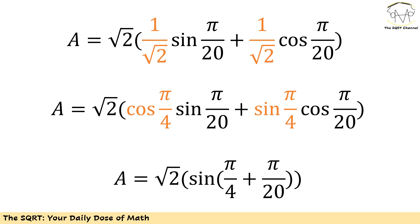So I'm going to replace the first 1 over √2 with cosine of π over 4 and the second with sine of π over 4. That gives me cosine(π/4)·sine(π/20) plus sine(π/4)·cosine(π/20). I can rewrite this as sine of (π/4 + π/20), using the sine addition identity, and then apply the √2 factor from the first step.